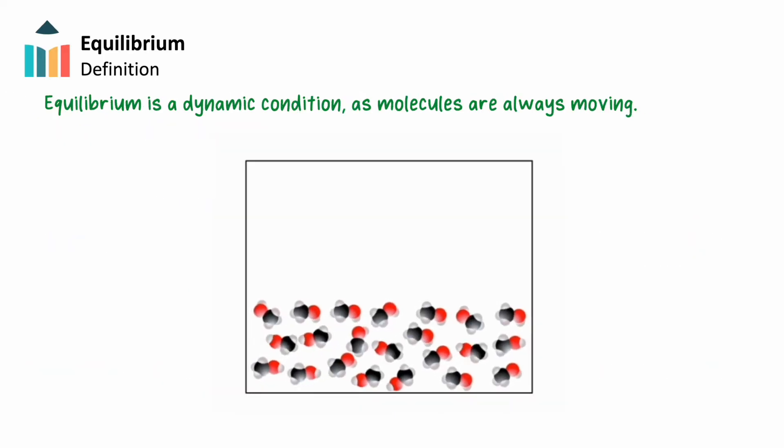It is important to understand that equilibrium is a dynamic condition. Atoms and molecules are always moving, and therefore they are always colliding. A great way to understand the concept of equilibrium is to examine a simple physical system in which a liquid, say methanol, acts in a closed container at a constant temperature.